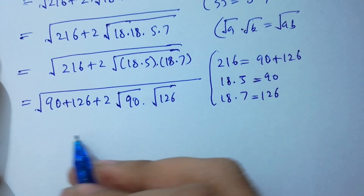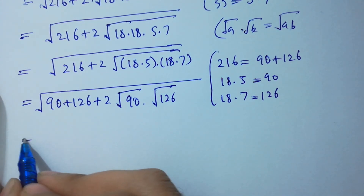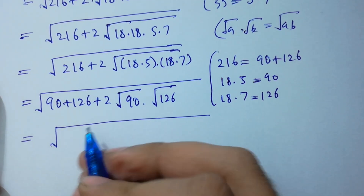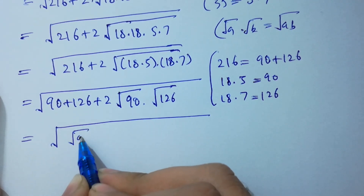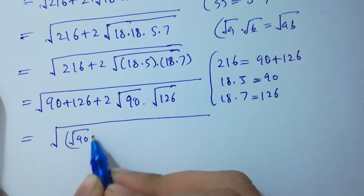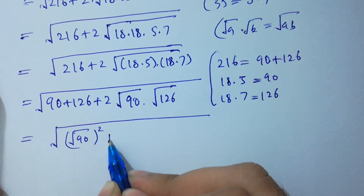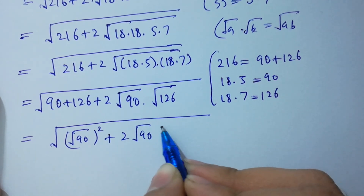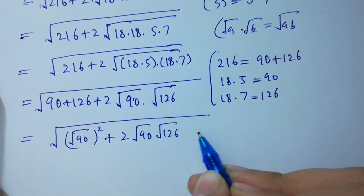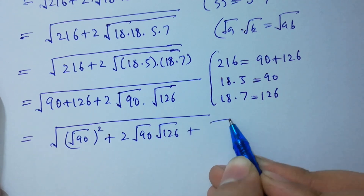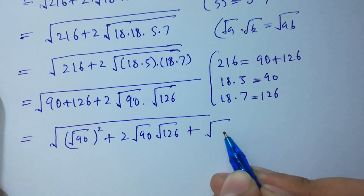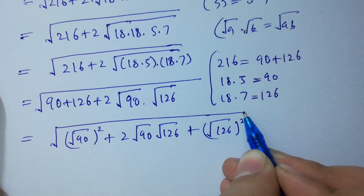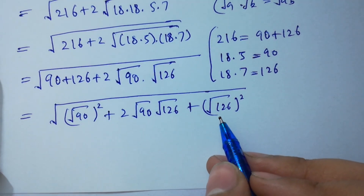This is the same as square root of 216 plus 2 times square root of 90 times square root of 126, which is a whole square — following the formula a squared plus 2ab plus b squared equals (a plus b) whole squared.